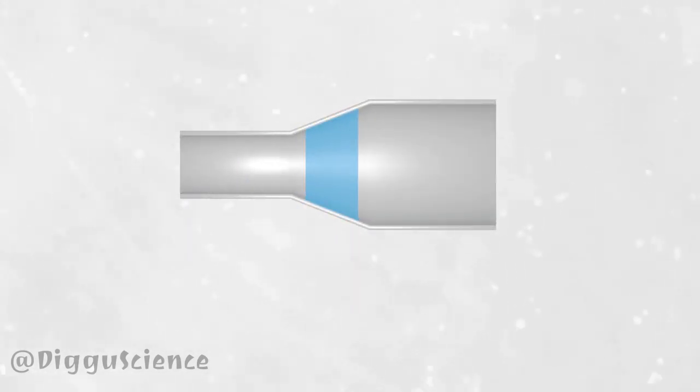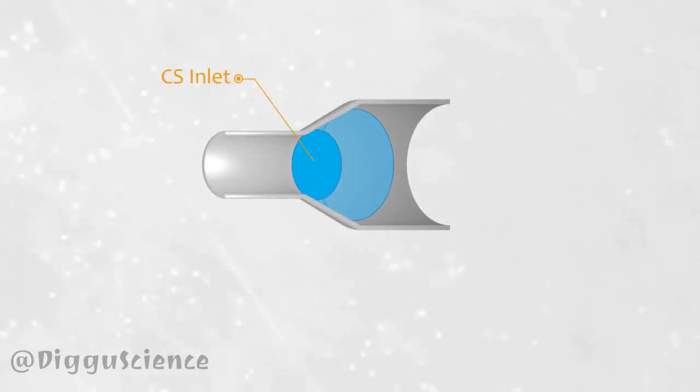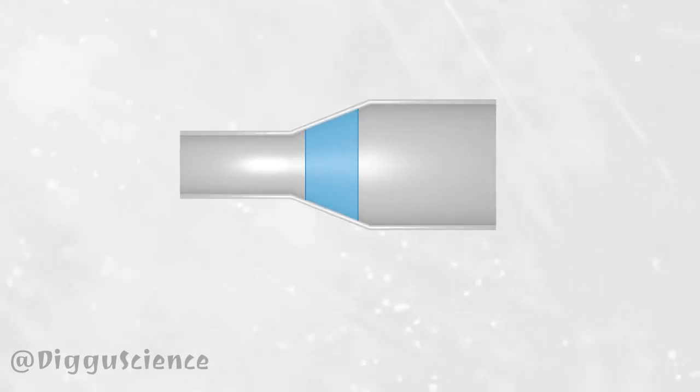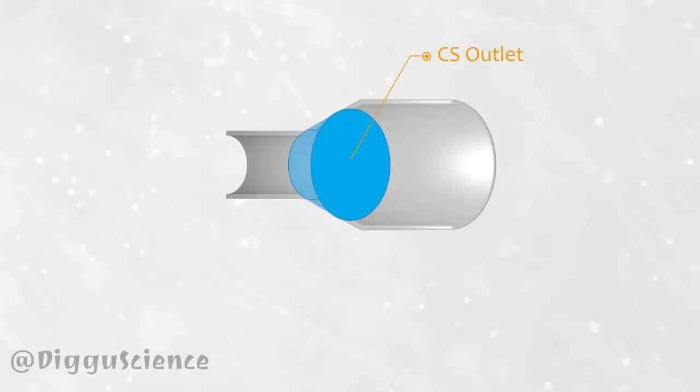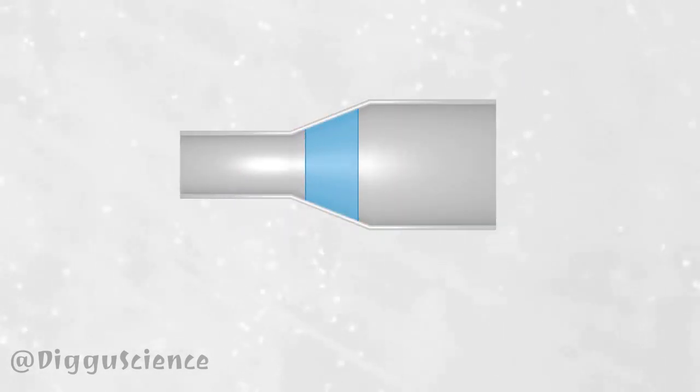In this control volume there are two control surfaces at the inlet and at the outlets. At time t0 inside the control volume there is a certain amount of fluid. Of course the volume of the fluid is the same as the volume of the control volume.